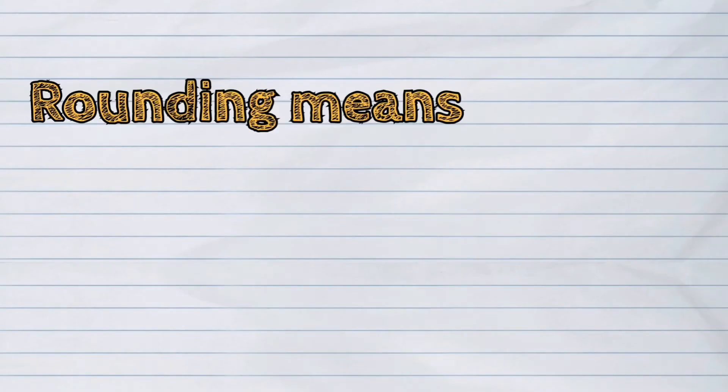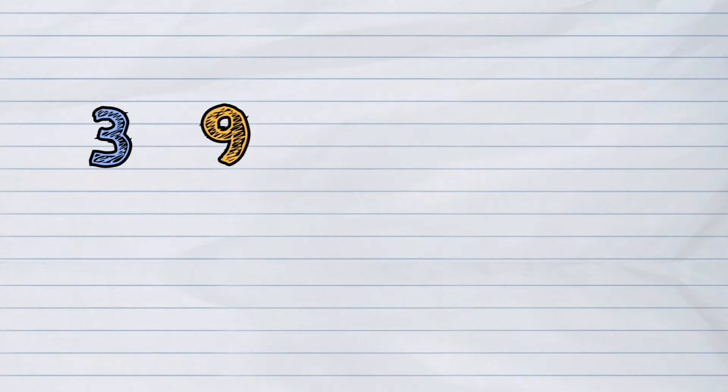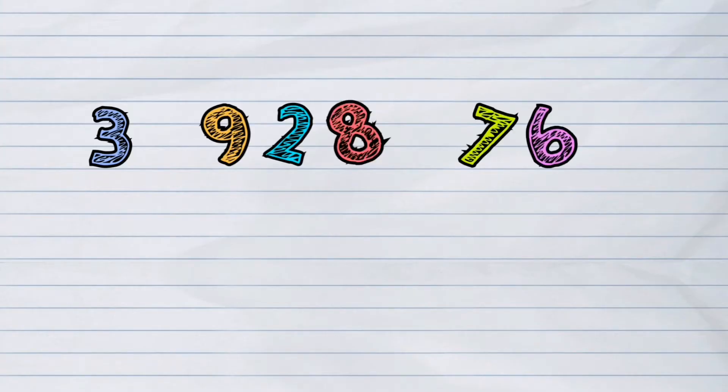Rounding means making a number simpler but keeping its value close to what it was. We round off to avoid confusion, because having too many different numbers clustered together looks complicated.